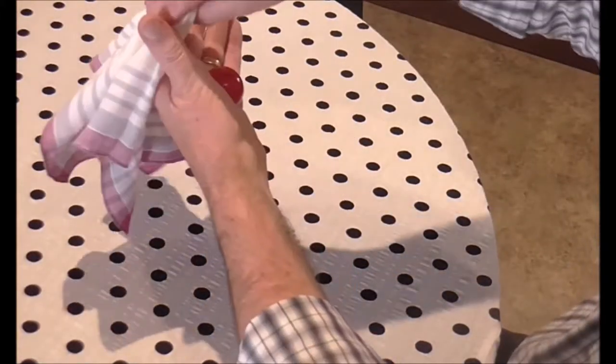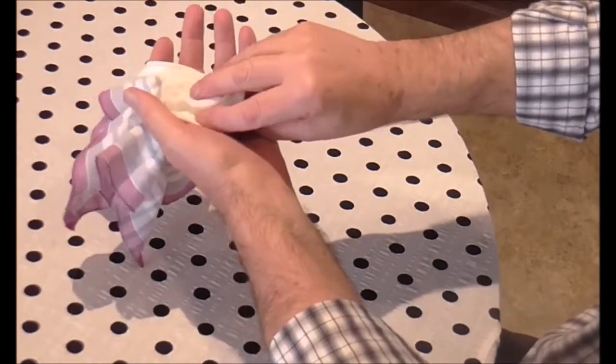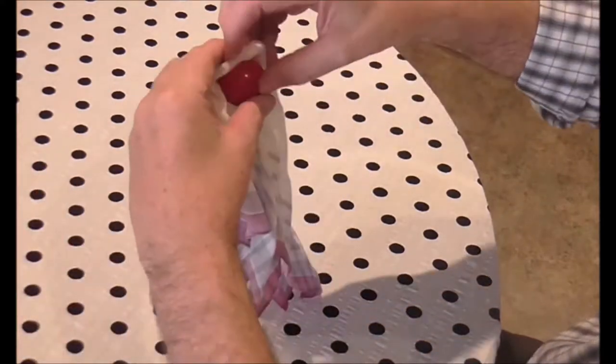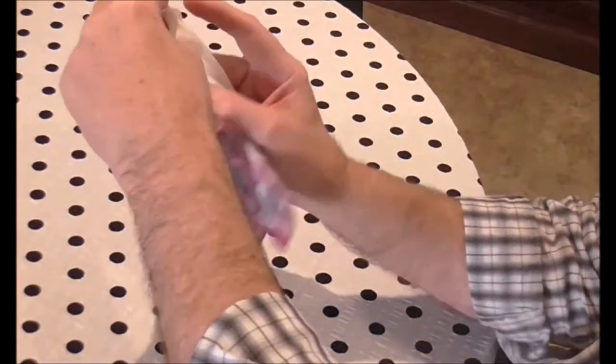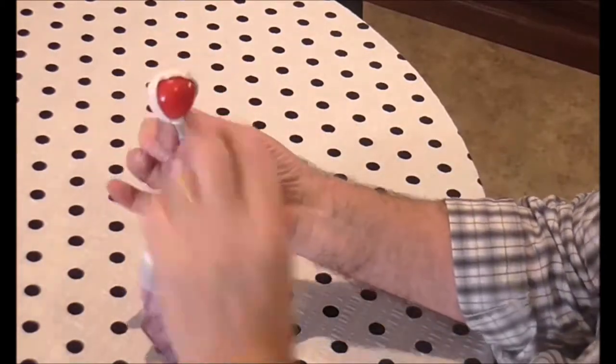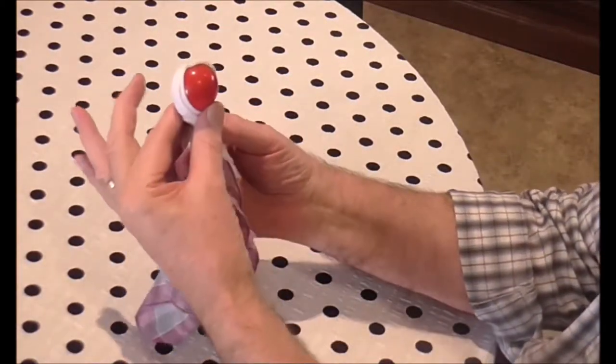Then you drag the handkerchief through your hand at the same time taking the ball with the handkerchief. Follow through like that. Swap your hands over and twist the handkerchief a couple of times so that the ball stays right where it is from the front. They can't see the ball at all.